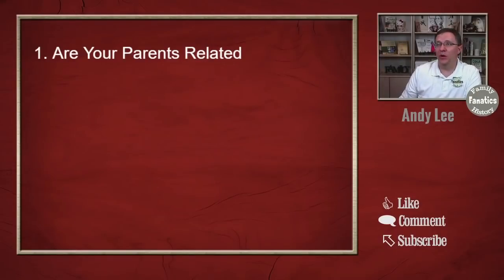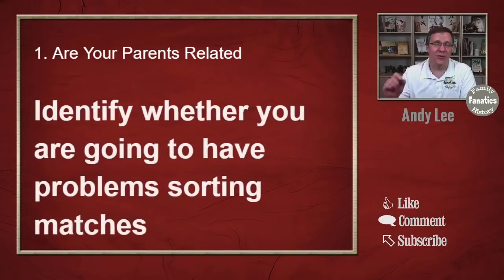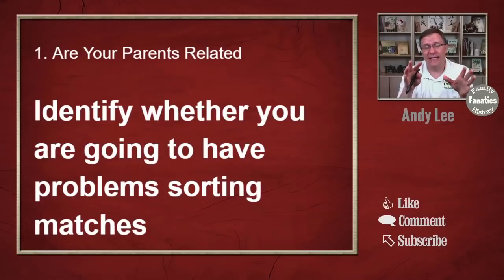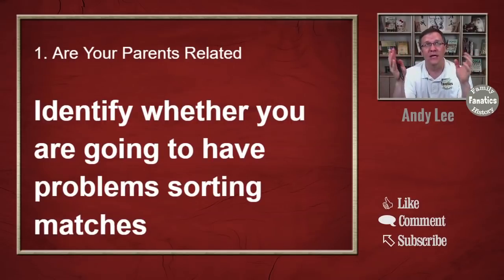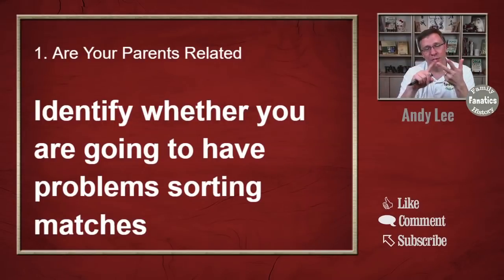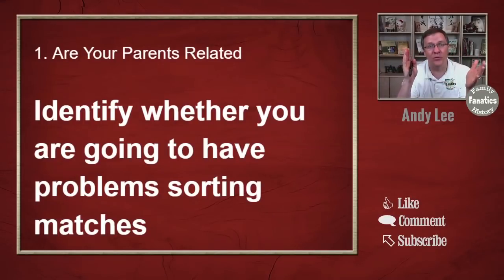You can watch the video that shows more about this, but in essence what you want to do is identify whether or not you're going to have problems sorting your matches. The majority of people have matches that can be sorted into two columns — those related to your father and those related to your mother. You inherited that DNA through one of those two lines. Unfortunately, for those whose parents are somewhat closely related — second, third, fourth, or fifth cousins — you end up sharing a little bit of DNA that you got from both your mother and father.